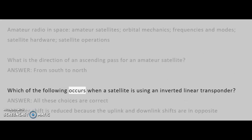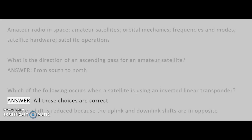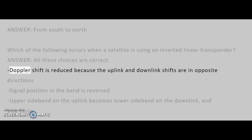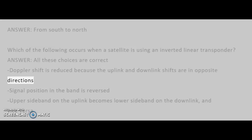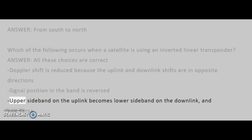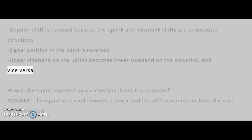Which of the following occurs when a satellite is using an inverted linear transponder? Answer: All these choices are correct. Doppler shift is reduced because the uplink and downlink shifts are in opposite directions. Signal position in the band is reversed. Upper sideband on the uplink becomes lower sideband on the downlink and vice versa.